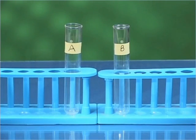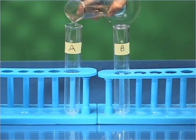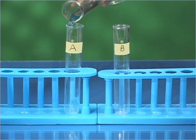Take two test tubes marked as A and B and in each test tube pour about 10 ml of copper sulfate solution.